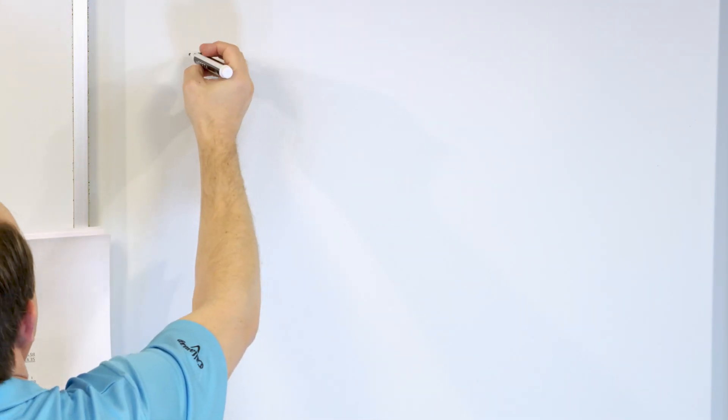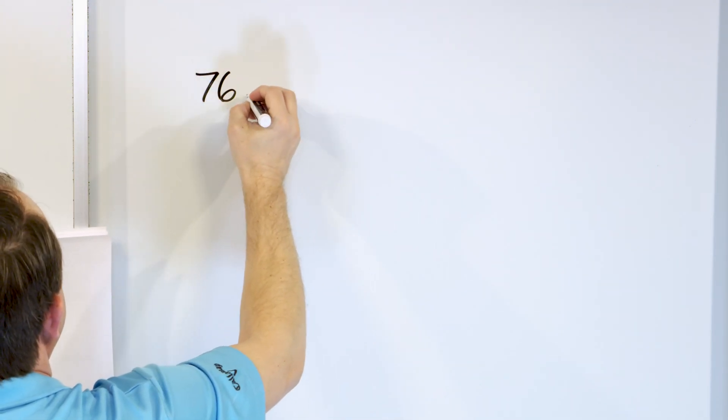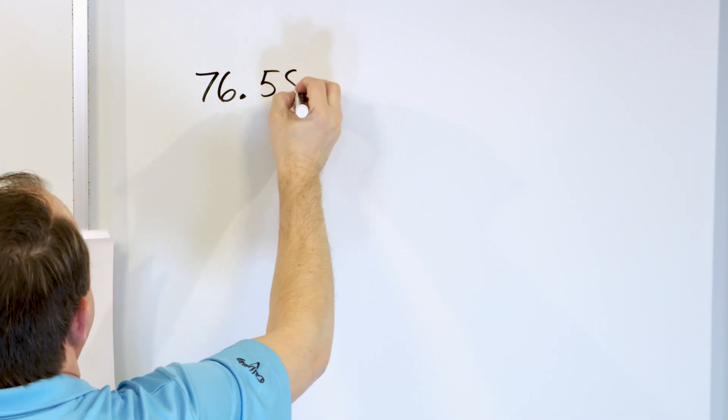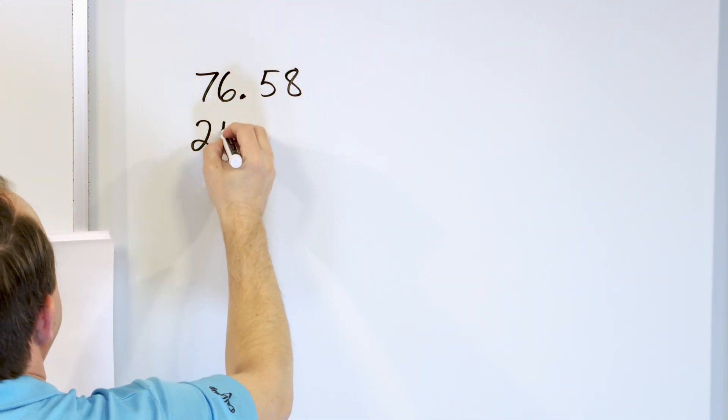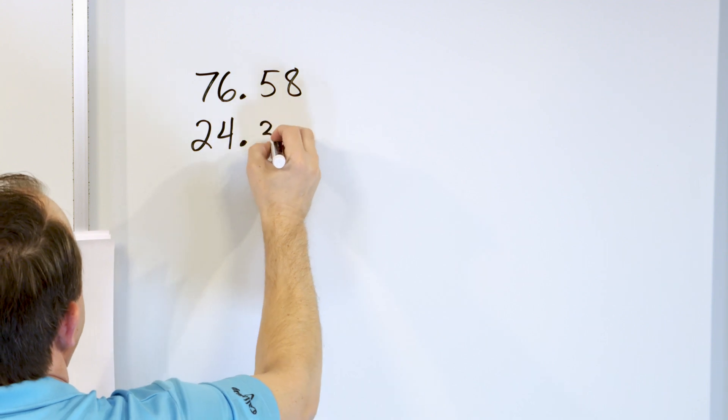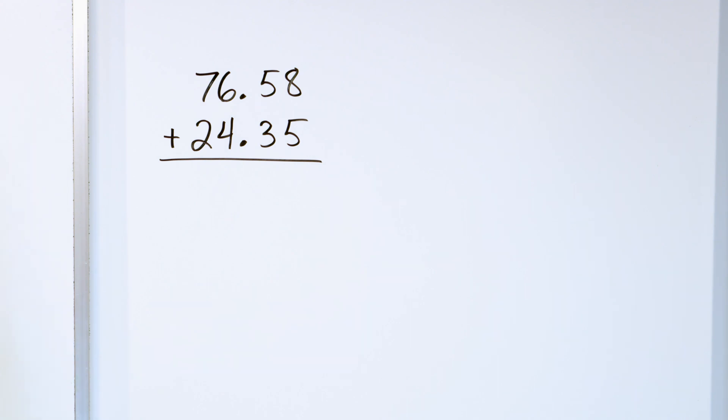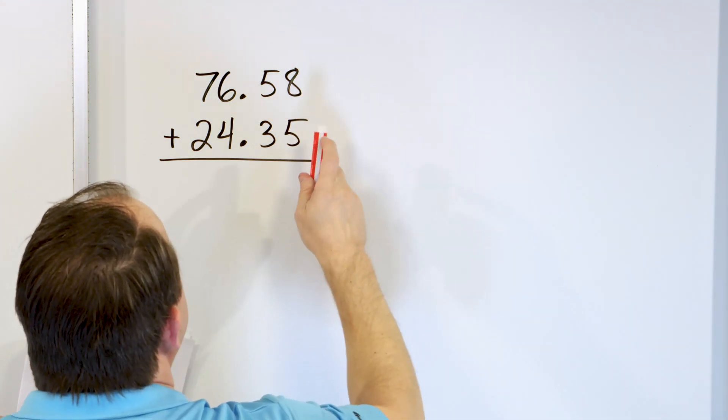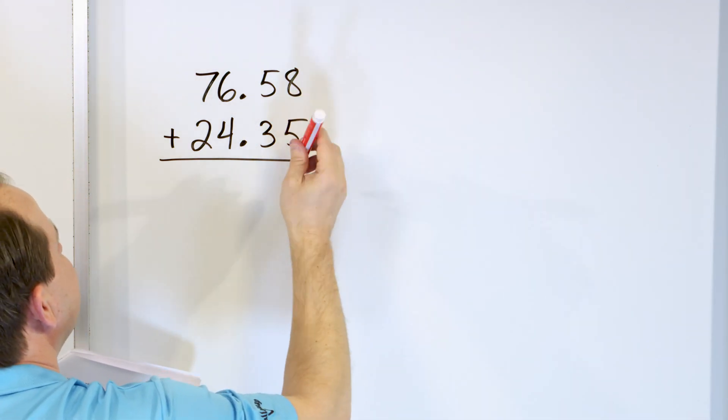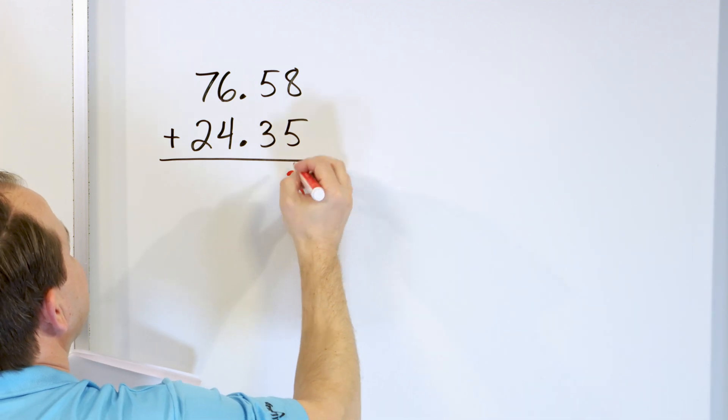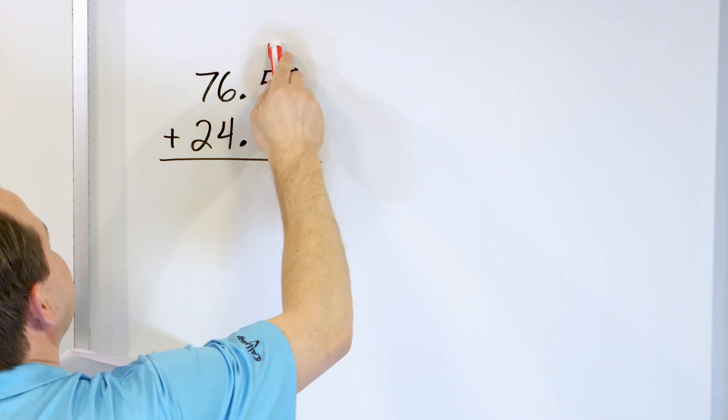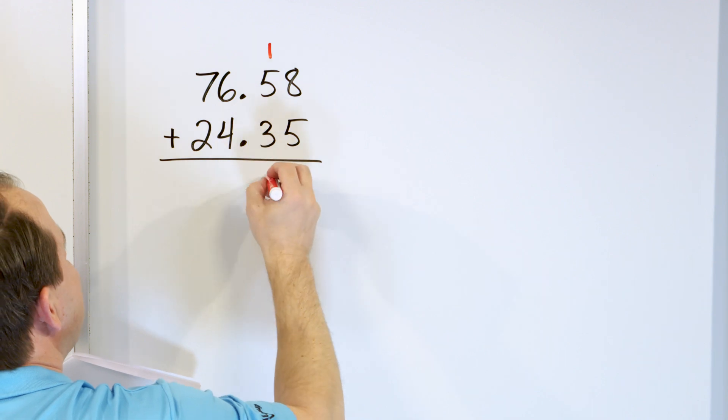We're about to the halfway mark. This is the halfway mark here. Let's take a look at 76.58. And we'll add to that 24.35. How do we add these? Same thing as before. Let's take a look in the right column. 8, 9, 10, 11, 12, 13. So, 13 means a 3. Carry a 1. 5, 6, 7, 8, 9. 9 goes right here.